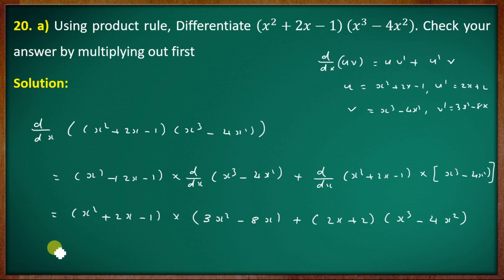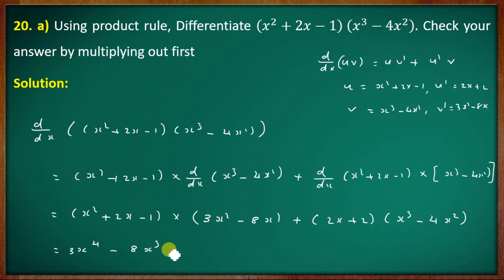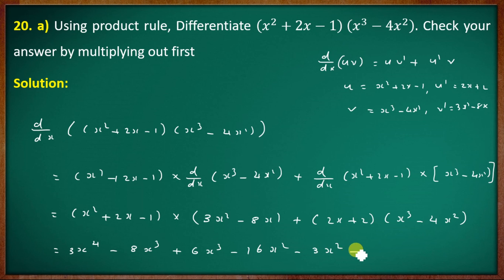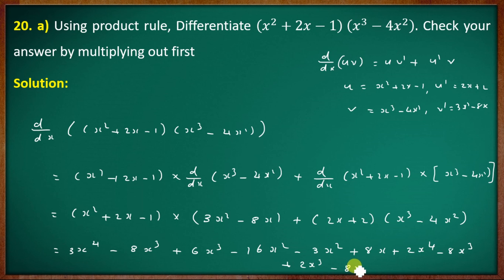Multiplying out: x² · 3x² = 3x⁴, x² · (−8x) = −8x³, then expanding remaining terms: 2x⁴ − 8x³ + 2x³ − 8x², collecting like terms from both products.